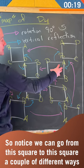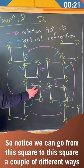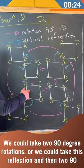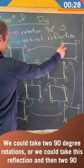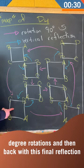Notice we can go from this square to this square a couple of different ways. We could take two 90-degree rotations, or we could take this reflection and then two 90-degree rotations, and then back with this final reflection.